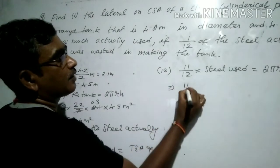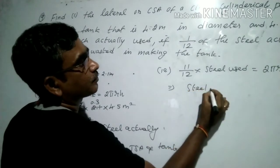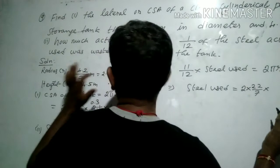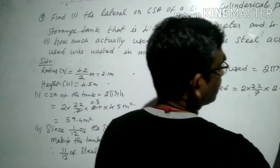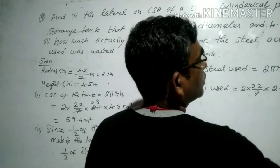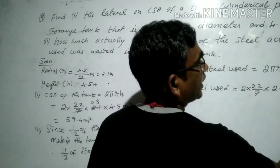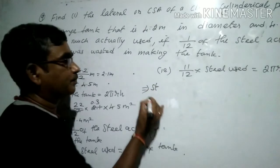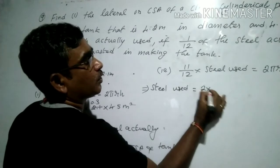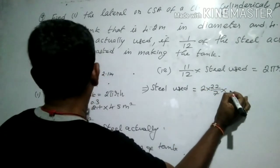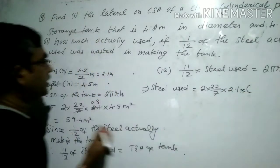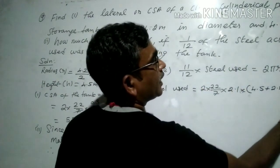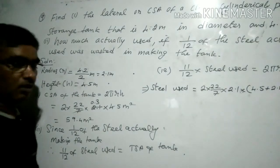So 11/12 times steel used equals 2 × (22/7) × 2.1 × (4.5 + 2.1). Transferring 11/12 to the other side gives us 12/11. Therefore, steel used equals 2 × (22/7) × 2.1 × (4.5 + 2.1) × (12/11). Now let's simplify all together.